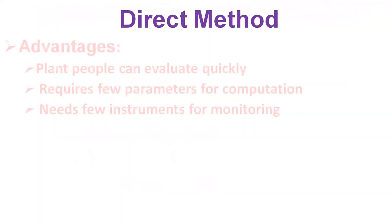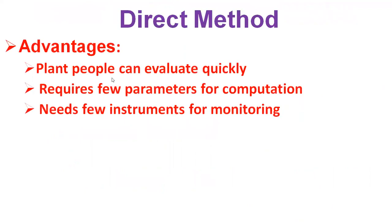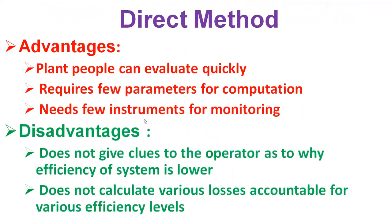The direct method has the advantage that plant personnel can evaluate it quickly. It requires few parameters for computation and needs few instruments for monitoring. The disadvantage of the direct method is that it does not give clues to the operator as to why efficiency is lower, and it does not calculate the various losses accountable for various efficiency levels.